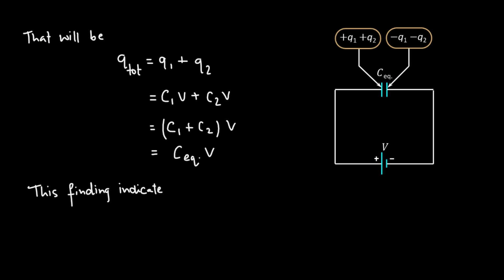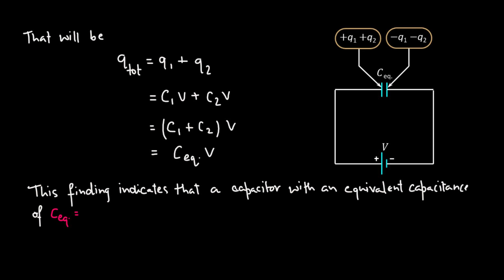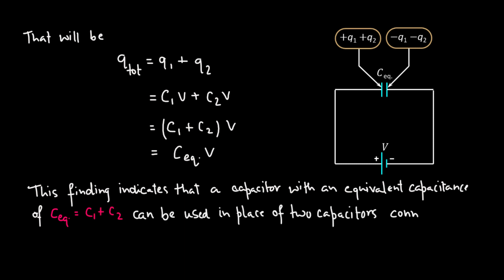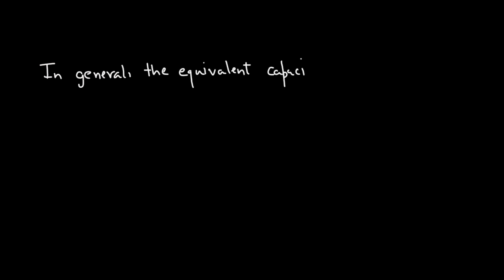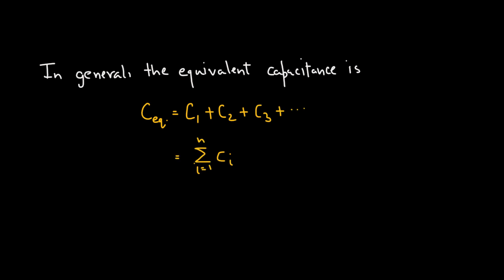This finding indicates that a capacitor with an equivalent capacitance of C_equivalent equals C1 plus C2 can be used in place of two capacitors connected in parallel. In general, the equivalent capacitance is C_equivalent equals C1 plus C2 plus C3 and so on, which can also be written in short as the summation of C_i for i going from 1 to N, for any number of parallel capacitors.